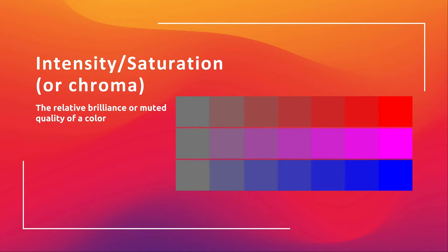Then you have intensity, saturation, or sometimes chroma. The intensity or saturation is the relative brilliance or muted quality of a color. We have our true hue here, and as the intensity or saturation is brought down, all three of these colors kind of go to the same sickly gray at the end. You can even start to see that hue become less muted as it moves to the right.